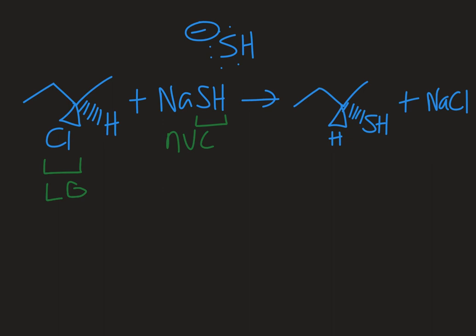This sulfur is going to come in and attack as the leaving group leaves—that is the concerted SN2 reaction, a backside attack to minimize electronic and steric repulsion. That would give me my thiol product, where I have that SH functional group that makes it a thiol.